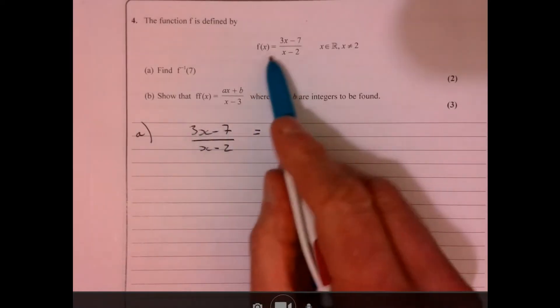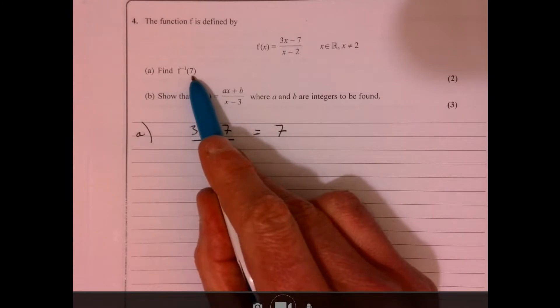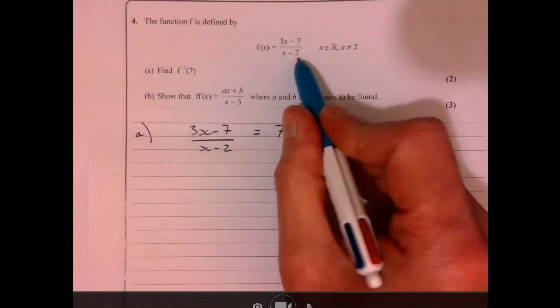Question 4. So you need to know what this actually means, right? Inverse function 7 going into it. It means when is this equal to 7?